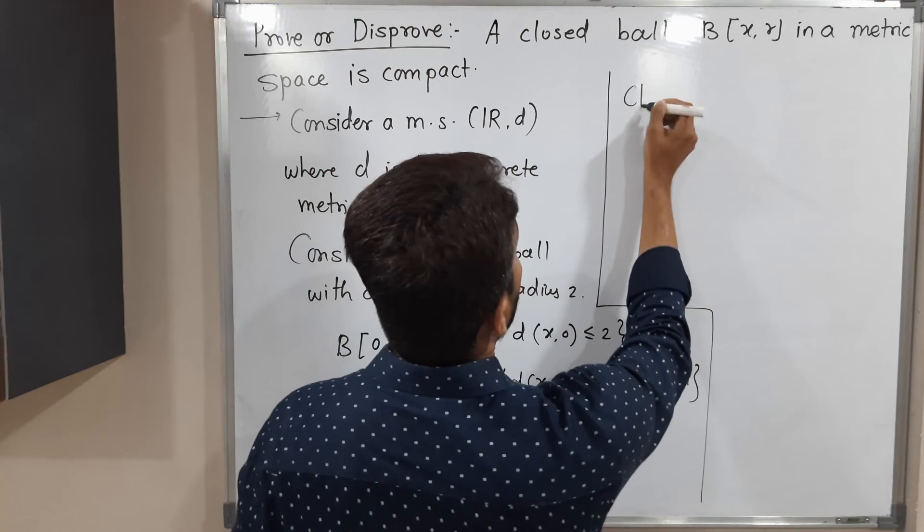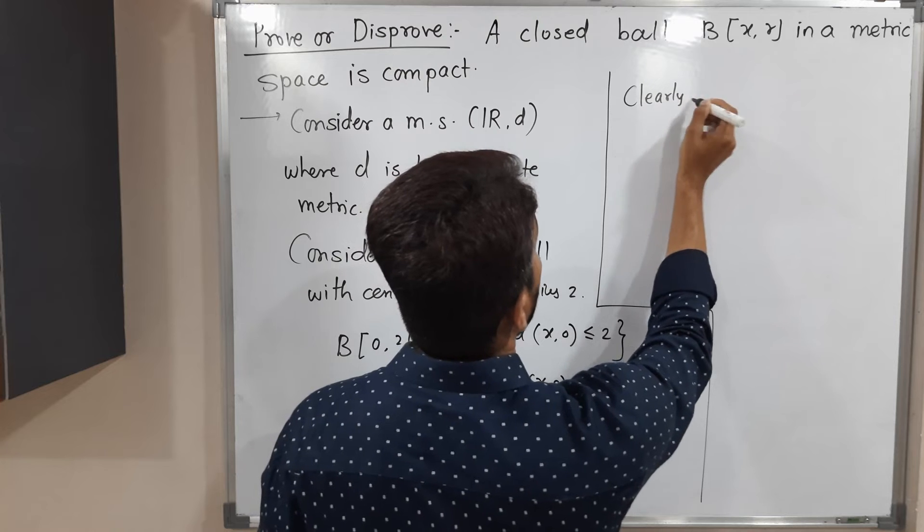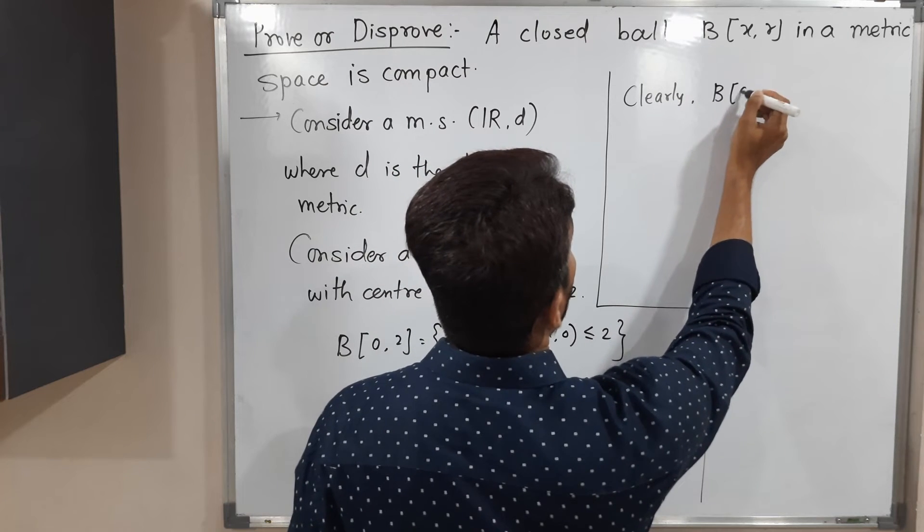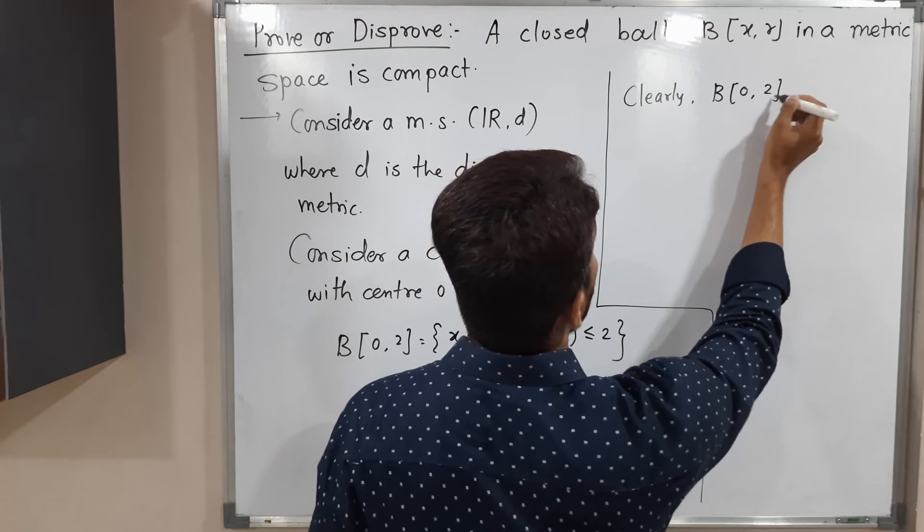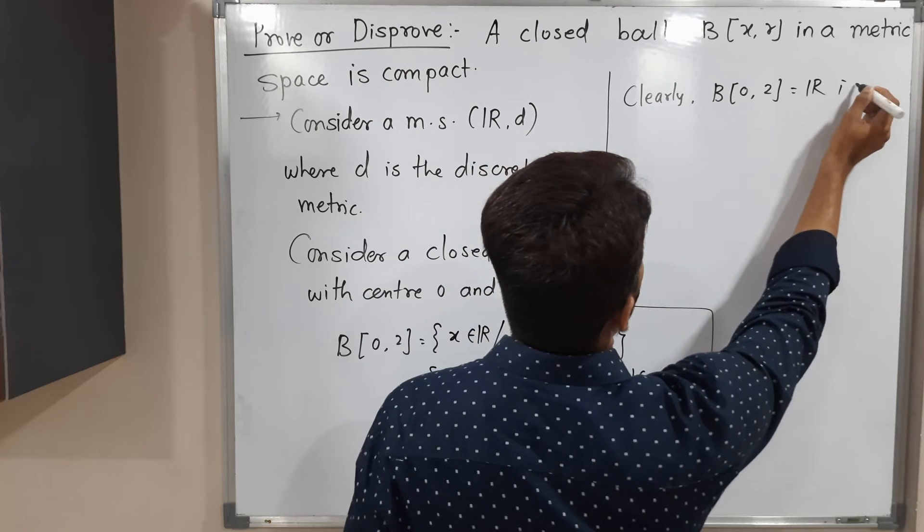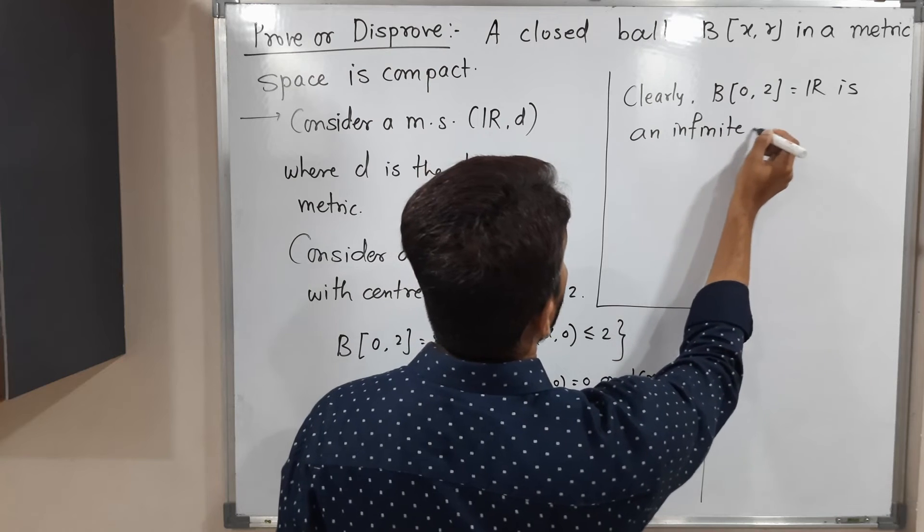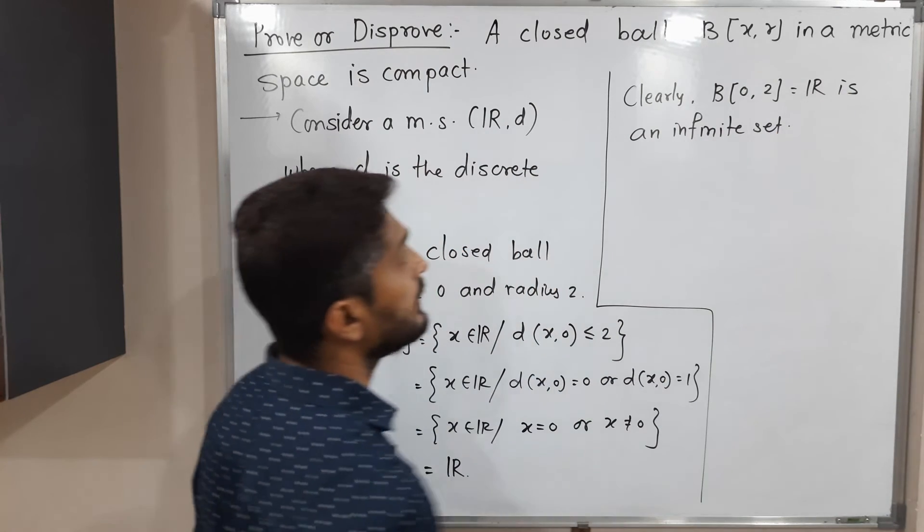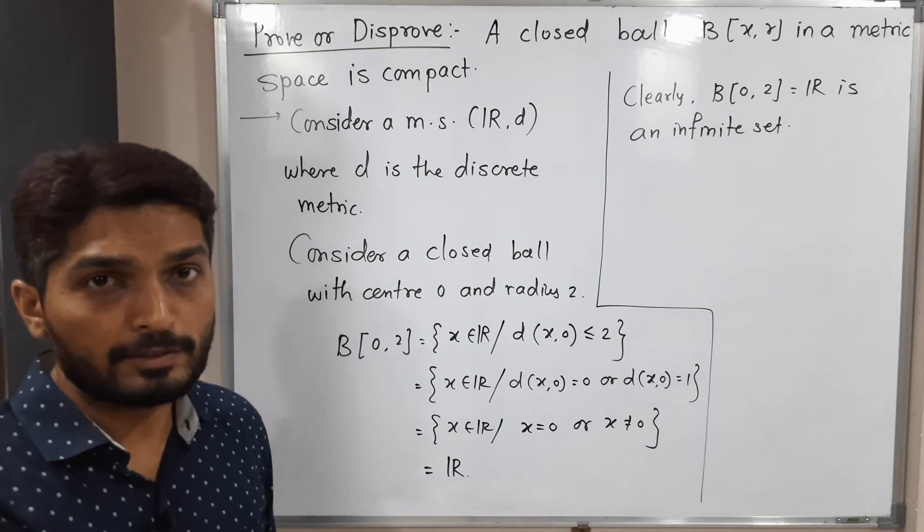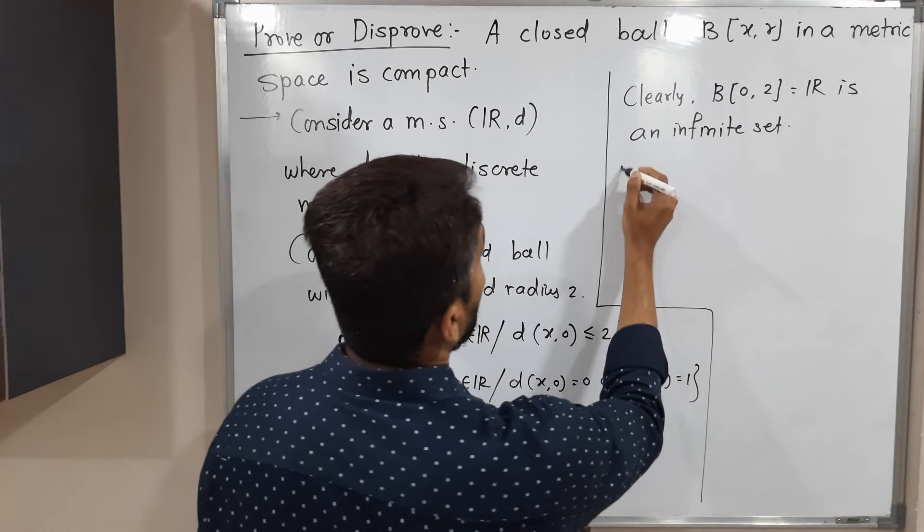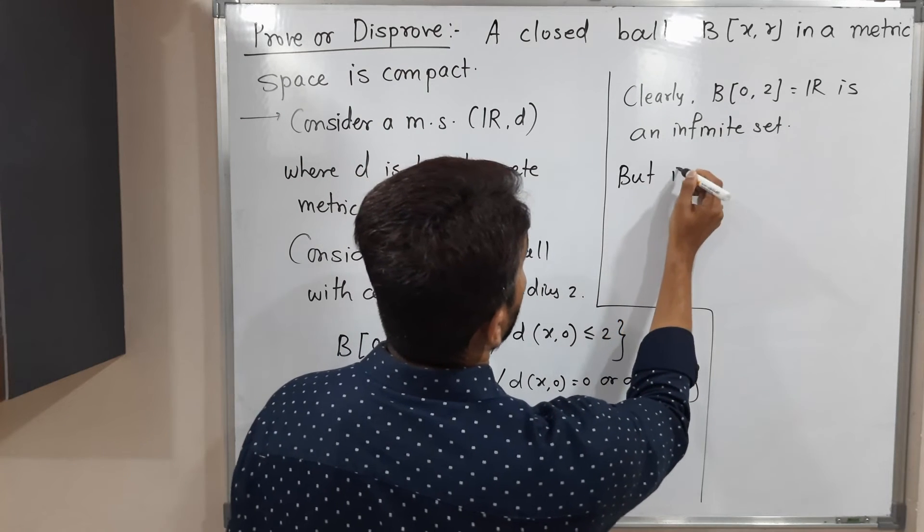Clearly, B(0,2) = R is an infinite set. Certainly it is infinite since in R there are infinitely many elements.